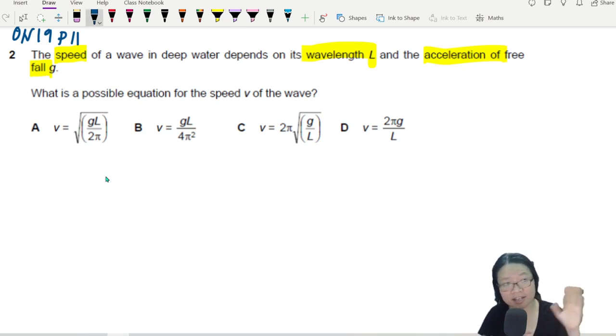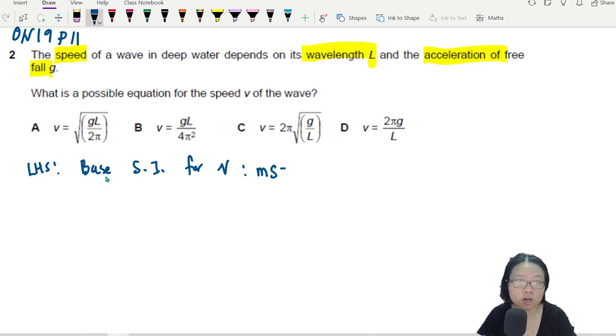So I think I will check the left-hand side first. So I'll write here, base SI for V. The base SI for V directly is MS⁻¹. So this is MS⁻¹. Then we go and—teacher, some minute, hang on, you chill first.